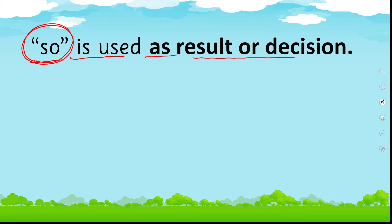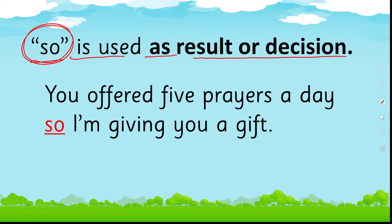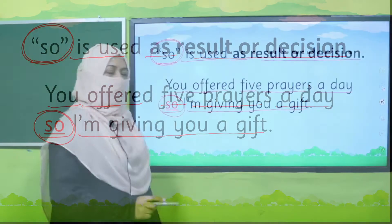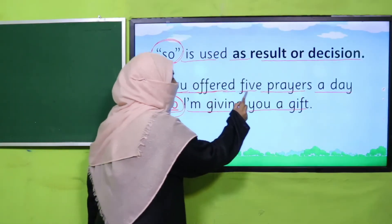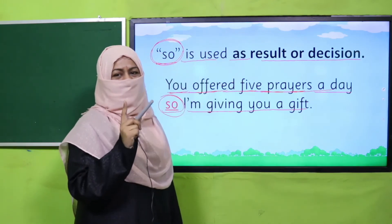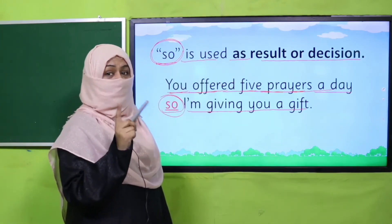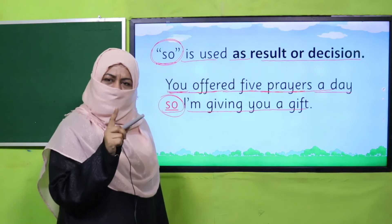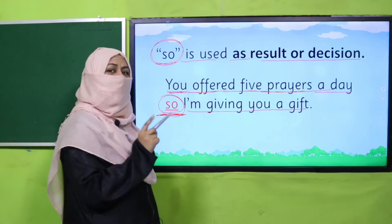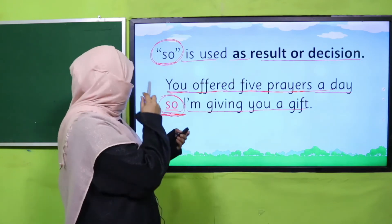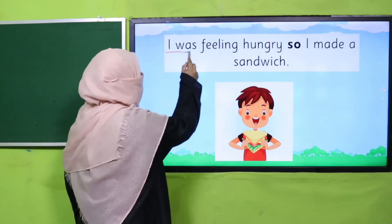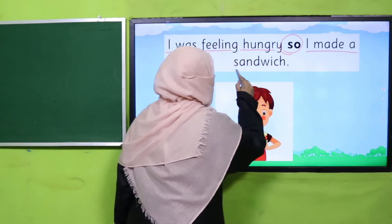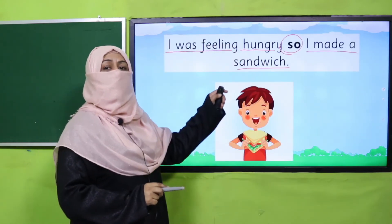The next joining word is 'so,' used to show a result or decision. For example: 'You offered five prayers a day, so I am giving you a gift' — the result of offering prayers is receiving a gift. Another example: 'I was feeling hungry, so I made a sandwich.' Do offer five prayers with your parents because you are young — you should offer prayer at home. This is how we use 'so.'